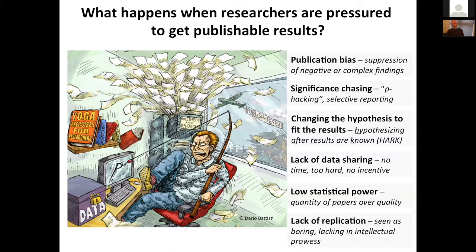Publication bias, suppression of negative or complex findings, significance chasing — otherwise known as p-hacking or selective reporting of results. When we retrofit a hypothesis onto results that are unexpected in order to produce a story that editors or reviewers will find more compelling. When we refuse to share data or are unable to do so. The focus on producing a large quantity of papers conflicts with quality, so studies are endemically underpowered. And replication is rare and seen as lacking intellectual prowess needed to secure funding or promotion.